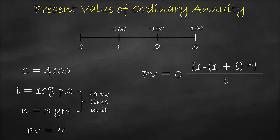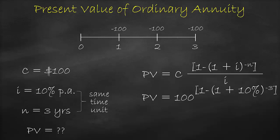Therefore, our present value today at time zero is 100 multiplied by, open first bracket, 1 minus, open second bracket, 1 plus 10%, close second bracket, to the power of negative 3, close first bracket, all divided by 10%, which is equal to $248.69.